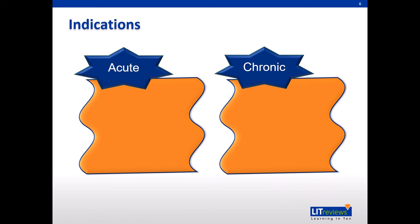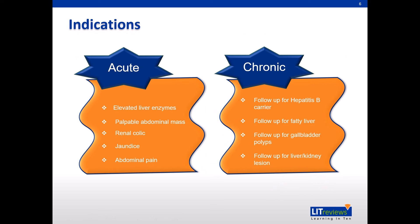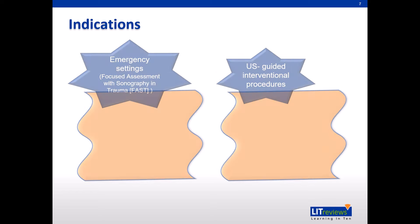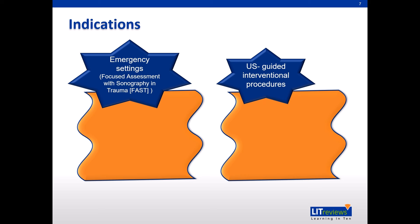This slide shows examples of acute and chronic indications for abdominal ultrasound. FAST scans in an emergency setting help detect free fluid, be it in the peritoneum, pericardial, or pleural cavity. In interventional procedures, ultrasound helps to guide needle placement for biopsy of parenchyma and mass, fluid aspiration, and injection of drugs.